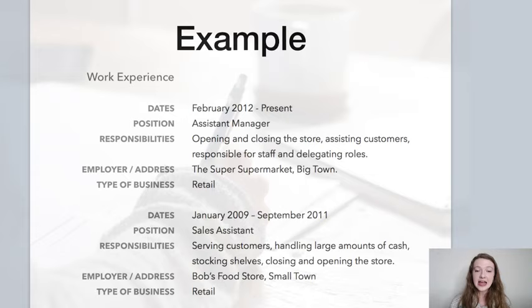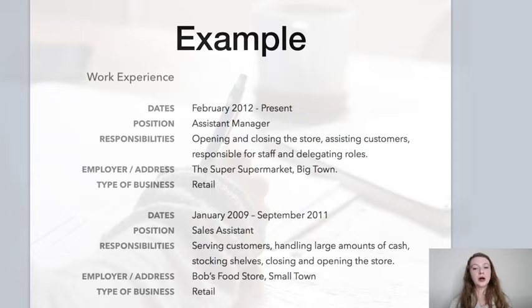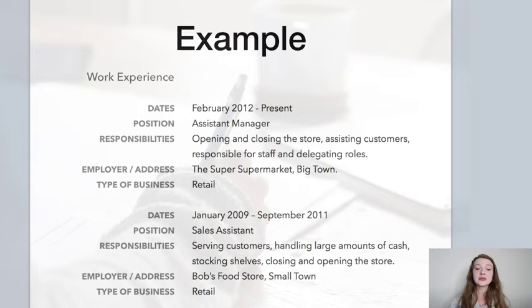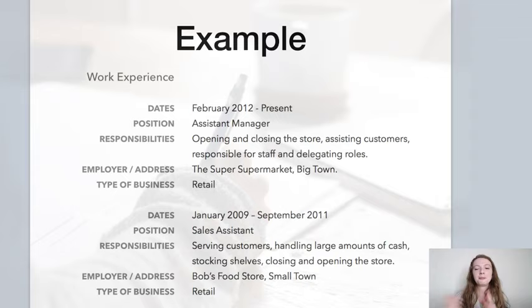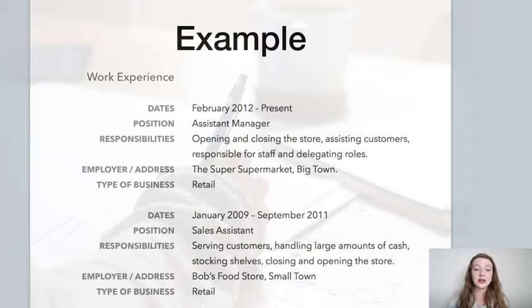Here's an example of the work experience section. The title is 'Work Experience', with dates showing just the month — not the exact date — so the employer has an idea of how long you've been working there. John has been working as an assistant manager. His responsibilities include opening and closing the store, assisting customers, and being responsible for staff and delegating roles. Then we have the employer's name and the type of business — which is optional. The same structure applies to his earlier role as a sales assistant between January 2009 and September 2011.